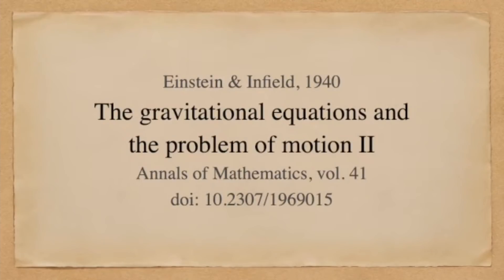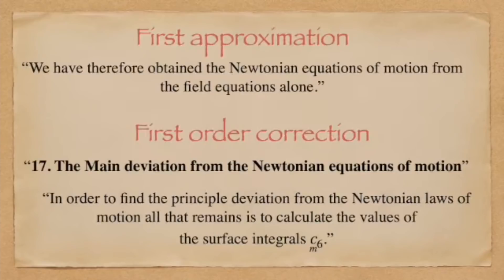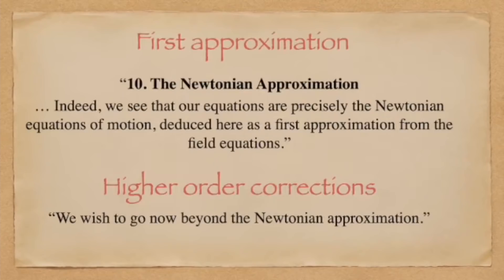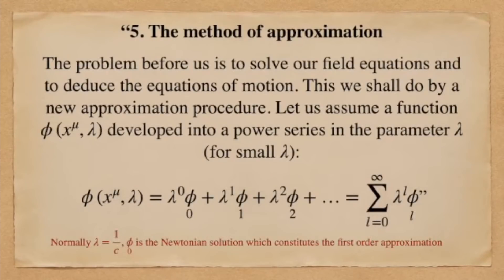Getting back to Einstein: how did he produce the predictions confirmed by these observations? He used Newtonian theory as a first approximation and applied small deviations from that theory to consider more complicated systems. This approach is called the post-Newtonian formalism, and Einstein and his colleagues refined it across multiple publications. In all cases, the basic methodology was the same: use Newtonian theory as first approximation and apply higher-order corrections to generalize — specifically, expanding a power series around the Newtonian approximation.